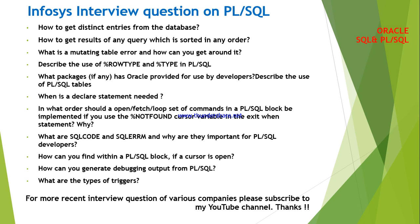How to get distinct entries from a database? How to get results of any query which is stored in any order? What is a mutating table error and how can you get around it?